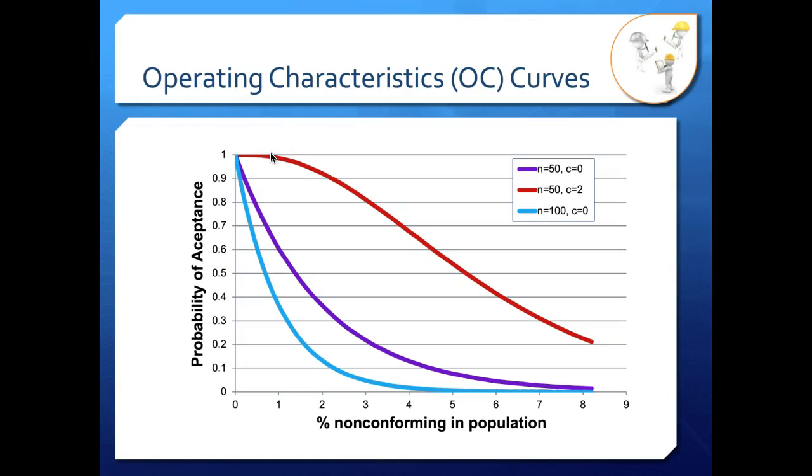What happens if we drop our acceptance criteria, our C, down to zero? Well then we get the purple curve. So here if we have 1% non-conforming in our population, we have a probability of somewhere around 0.65 or 65% chance of accepting our lot based on that sample. And that's because every sample has to be perfect for you to accept that lot. There is no non-conformities allowed in any sample. And so your probability of acceptance drops because if you have 1% non-conforming in your population, you're likely to pick up at least one non-conforming unit in a sample of 50.